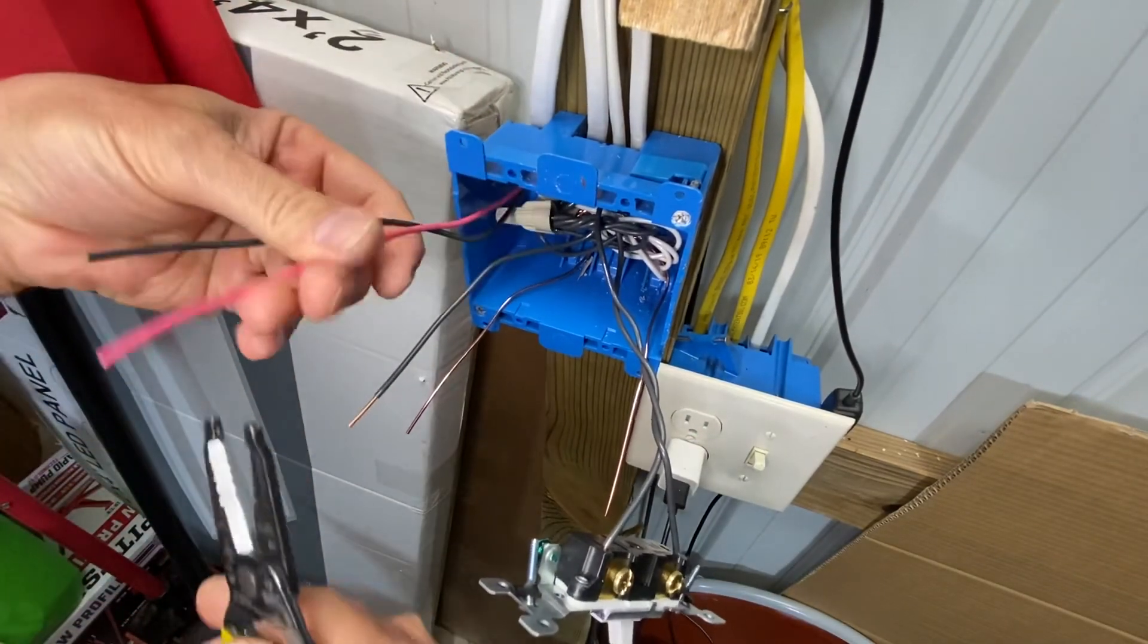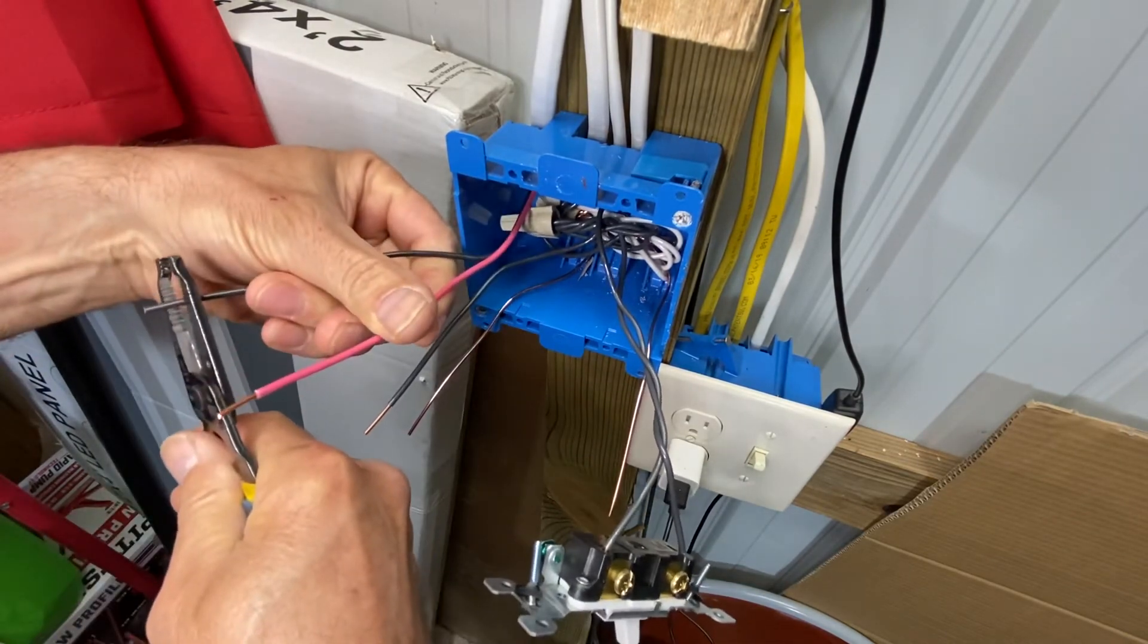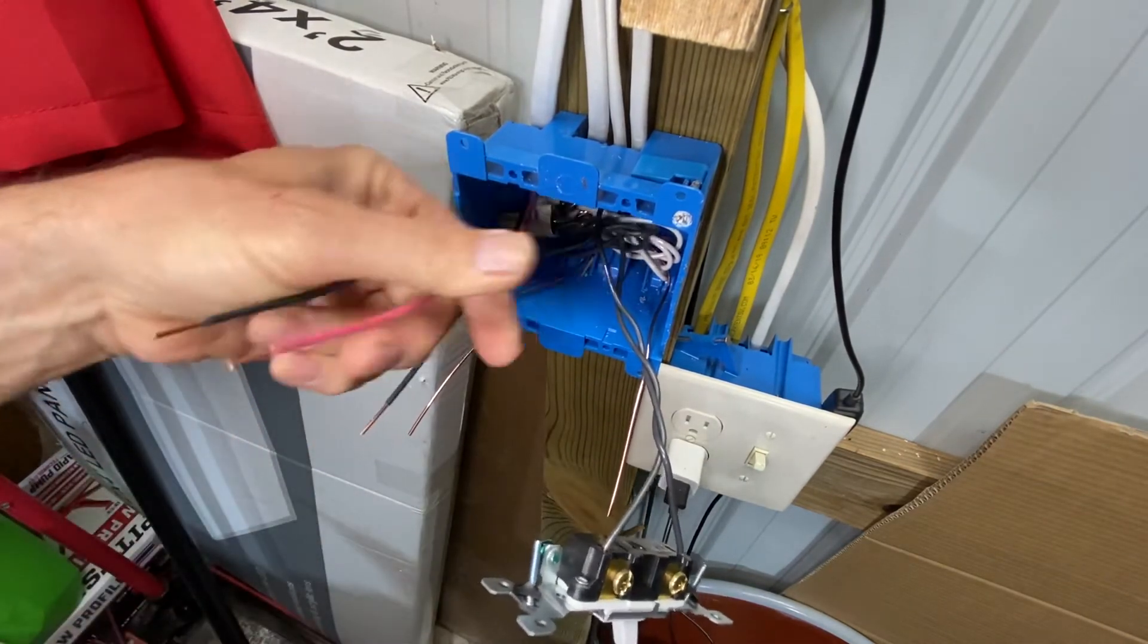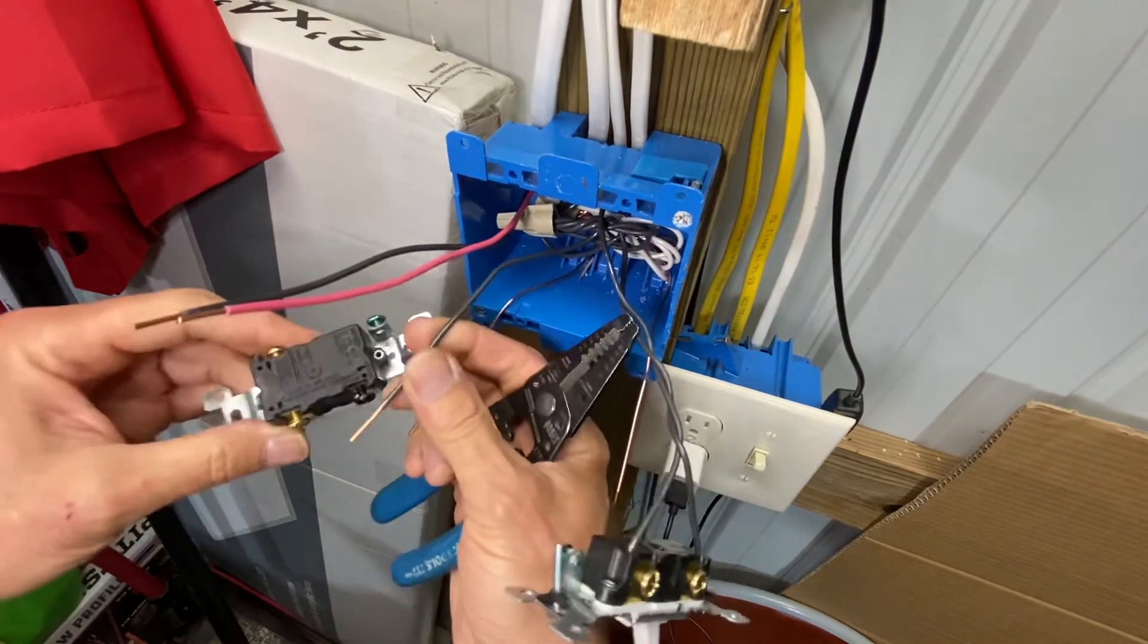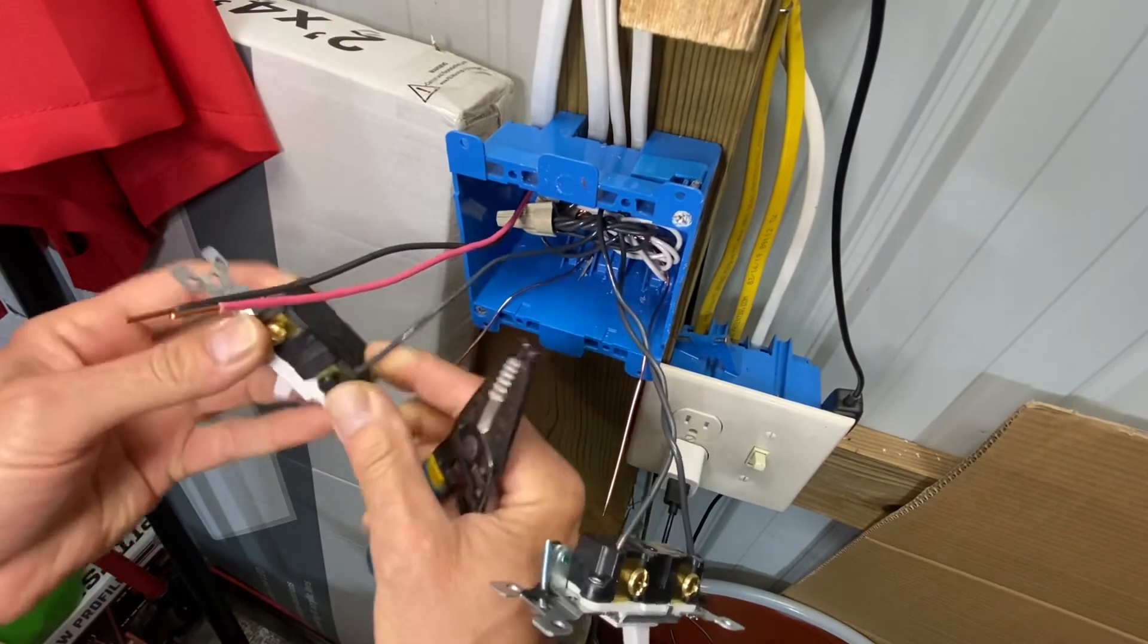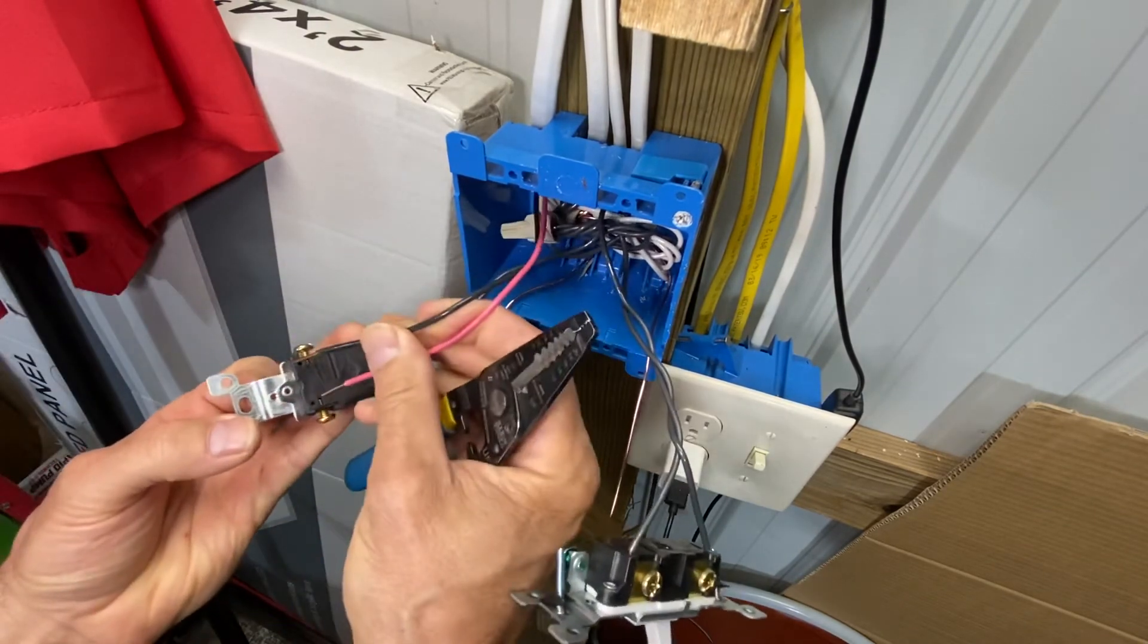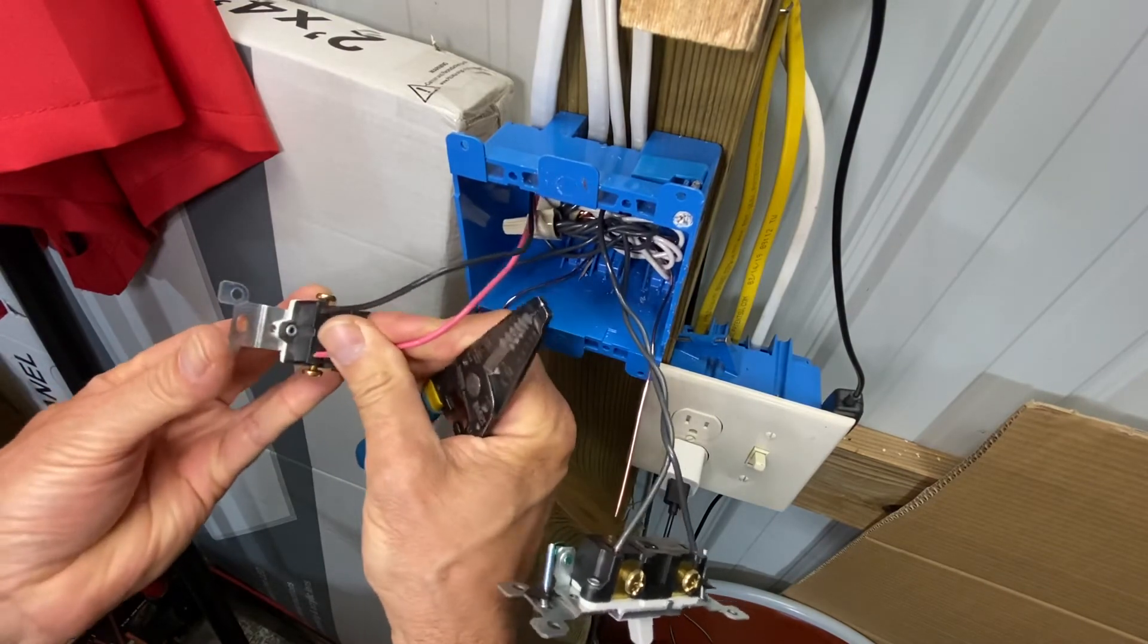Three wire. Three-way. Strip them off about a half an inch. Something. Now, the feed goes in the black screw. The travelers, it don't matter which side they go on. They can go in either way. Plug's in there. Give them a little twist.